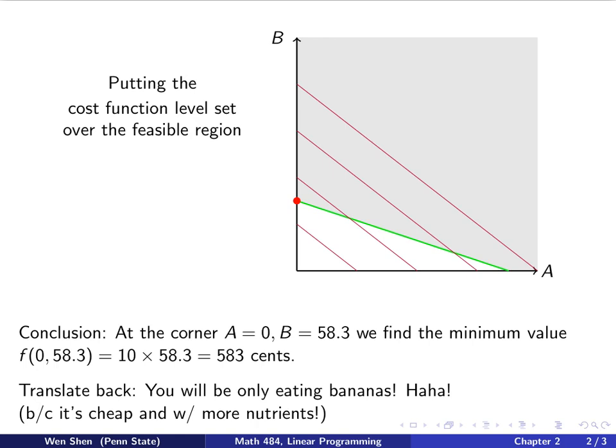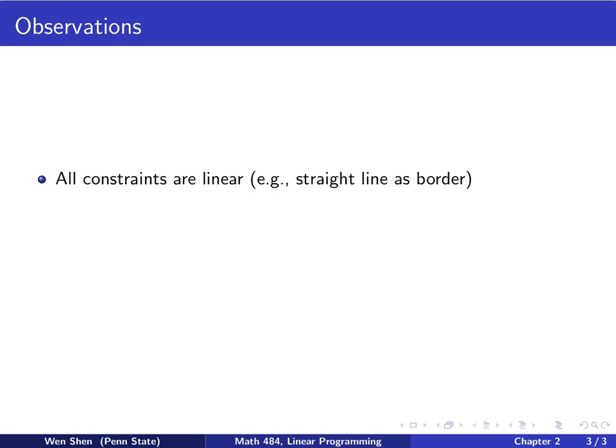Let's summarize a bit. So after we have done one problem and solved one problem, let's make some observations. We see that all our constraints are linear. That is, the boundary of the problems are all straight lines. And therefore, for the feasible region, the border will be straight lines.